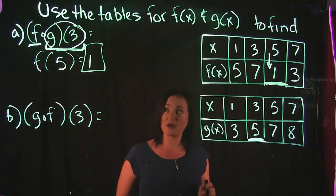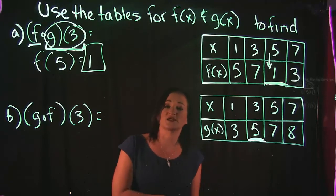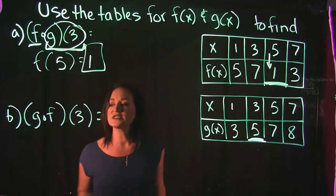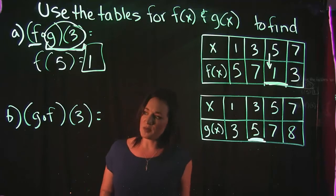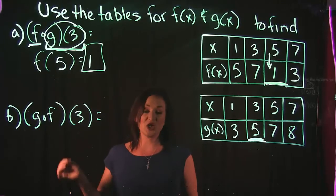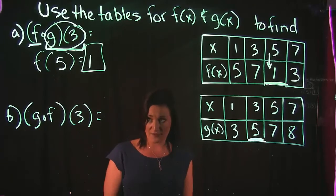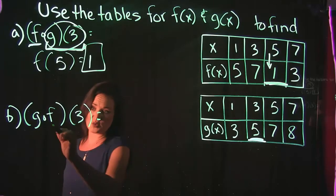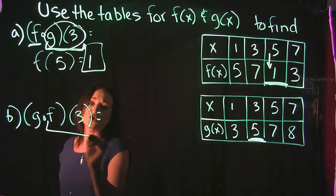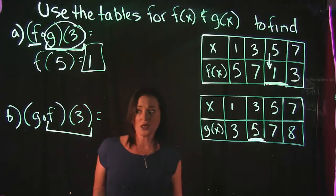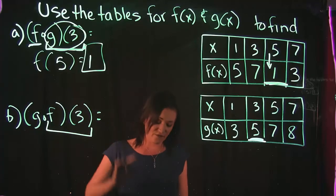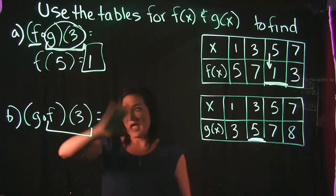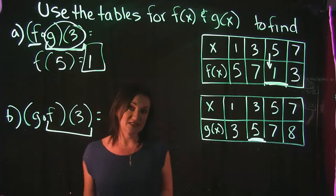Find g of 3 first, then use that answer to find f of that — that's how part a works. Now we do the same thing with example b. Notice that example b is g of f of 3. Again, we start from right to left, so the first thing we do is find f of 3, get that answer, and then plug it into g.